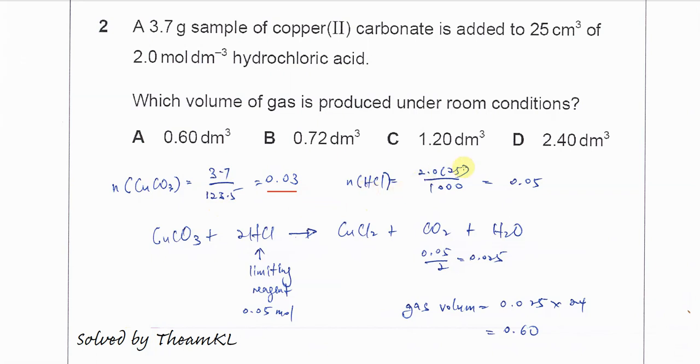MV over 1000, so you should get 0.05. Next step, you should construct a balanced equation: copper carbonate with HCl forms the salt, CO2, and H2O, so it's a 1 to 2 ratio.